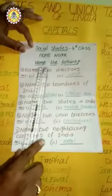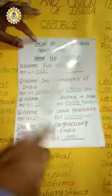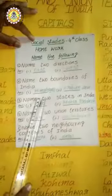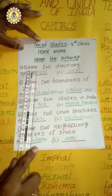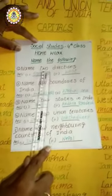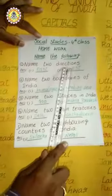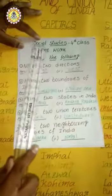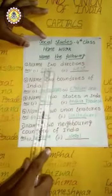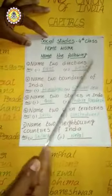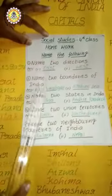So here are the answers from our last video. The first question: name two directions. We have four directions — north, south, east, west. Here I wrote east and west. You can write any two.